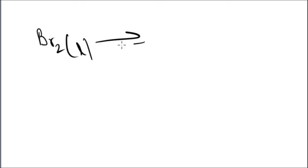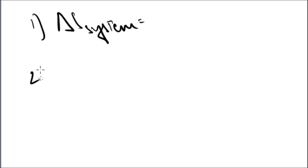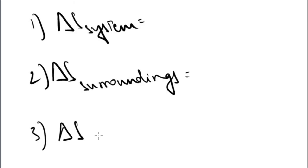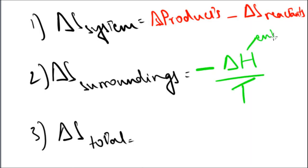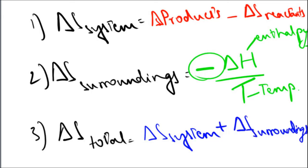For example, we will use our same reaction from the beginning of this lesson — bromine liquid going into gas. The entropy increases as the liquid becomes a gas. In order to find the entropy, you need to know a few formulae. We have three types of entropy: entropy of a system, entropy of surroundings, and total entropy. For the system, you have the entropy of the products minus the entropy of the reactants. For surroundings, it is minus delta H over T, where delta H is the change in enthalpy and T is the temperature in Kelvin. Then delta S total is the sum of delta S system and delta S surroundings.